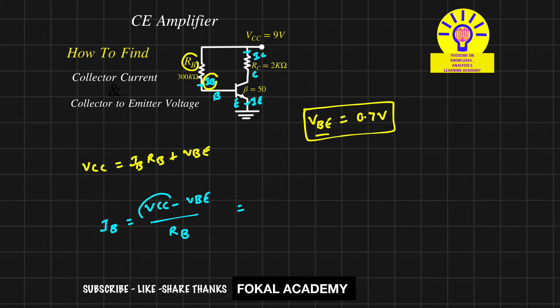Now substitute: VCC is given as 9 volts, VBE is 0.7 volts, and base resistance RB is 300 kilo-ohms. By simplifying, we get IB = 27.67 microamperes. This is the base current.